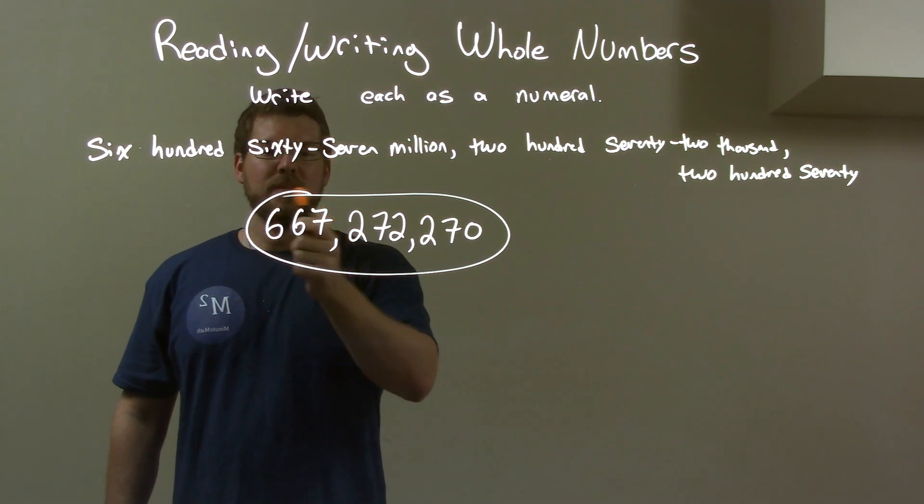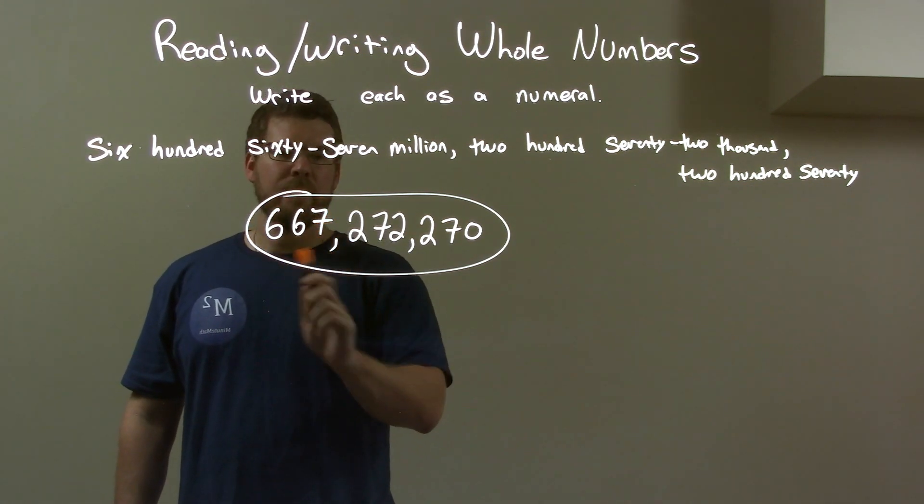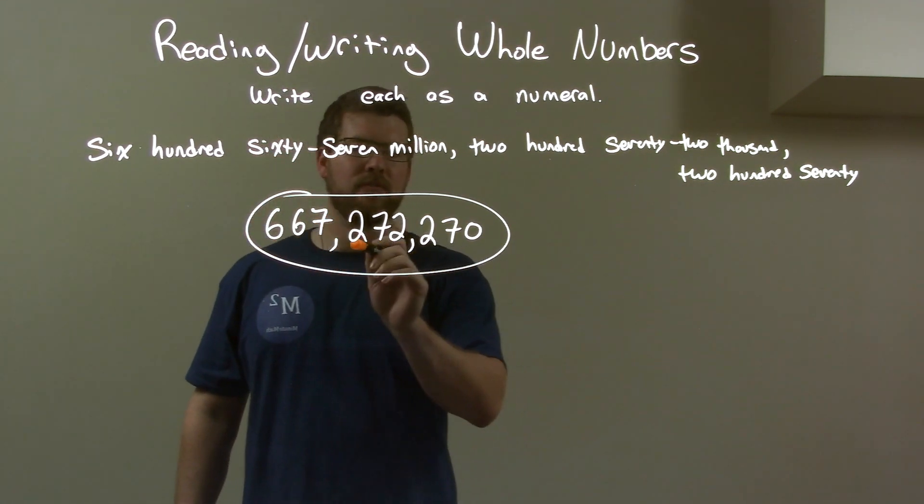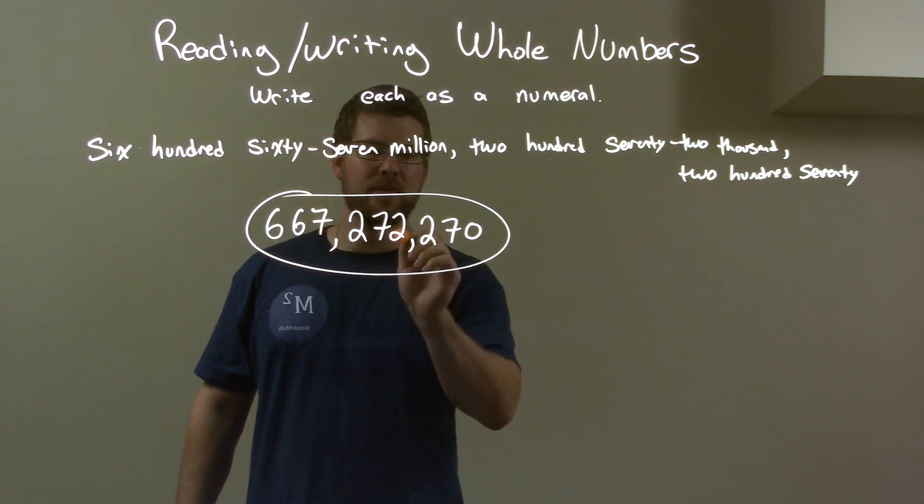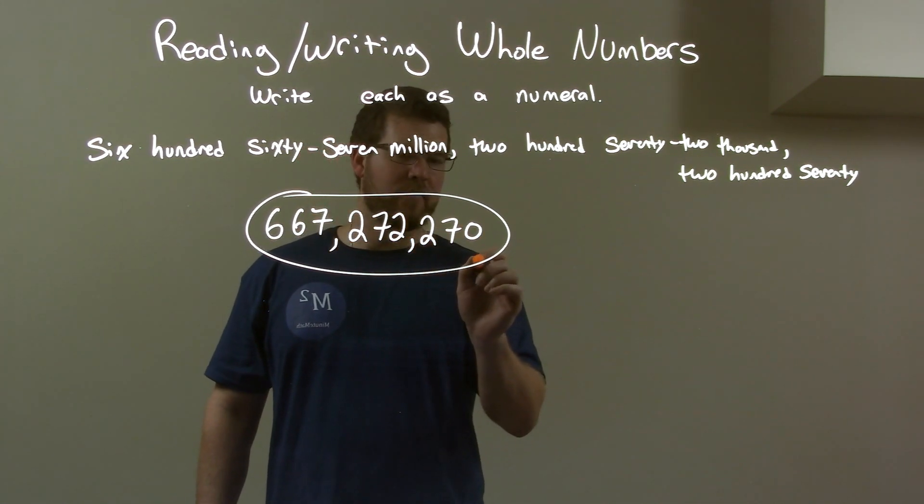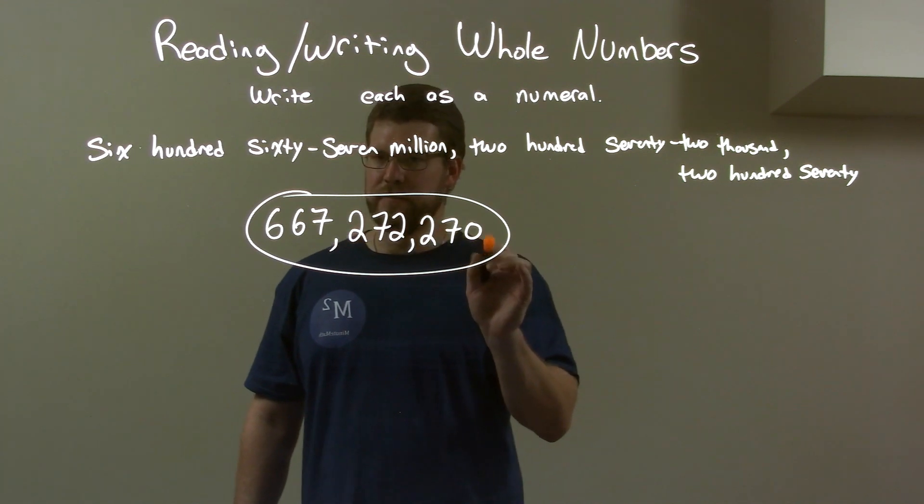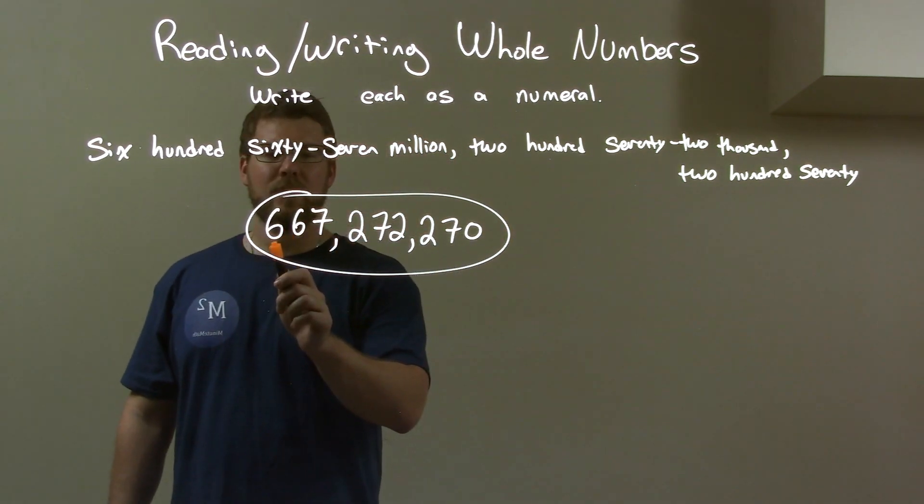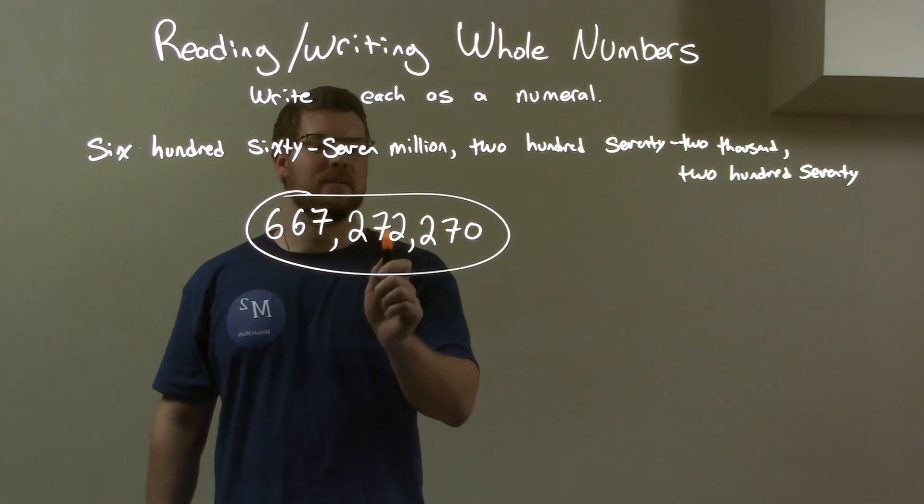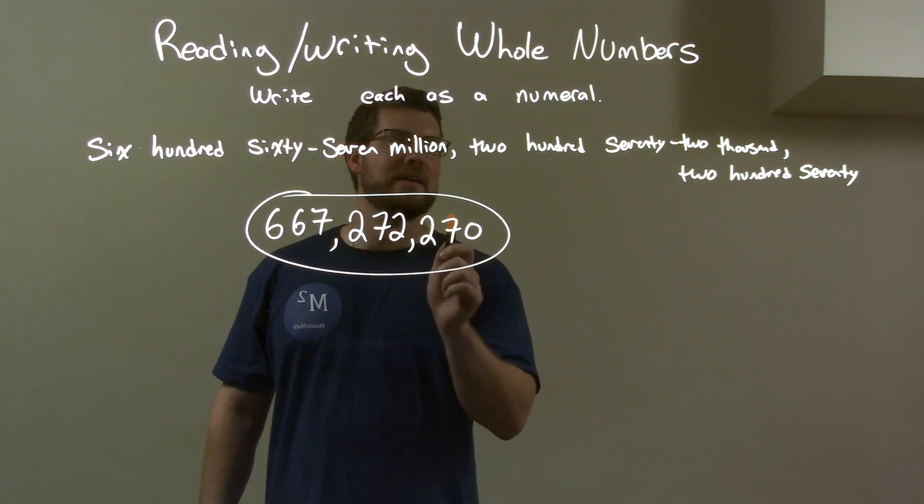First, we have six hundred and sixty-seven million, right there, six places afterwards. Then two hundred and seventy-two thousand, then three places afterwards, and two hundred and seventy. And there we have it again. Six hundred and sixty-seven million, two hundred and seventy-two thousand, two hundred and seventy.